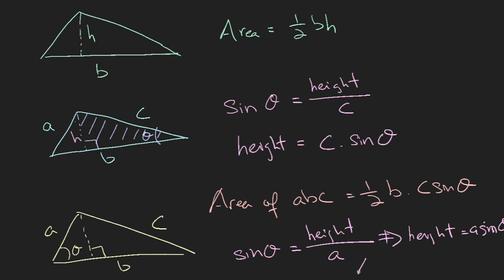So now height would be equal to A sine theta. So the area of triangle, the same triangle ABC, is equal to half A, which is A sine theta, which is this height, times B. So it's A B sine theta.